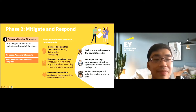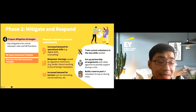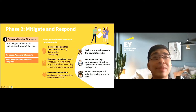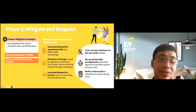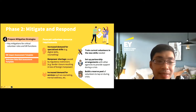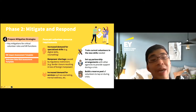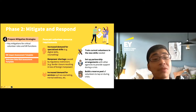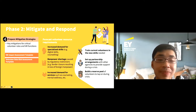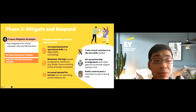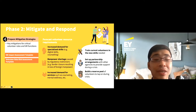Forecasting resource requirements means planning your volunteer needs ahead of time so that when crisis hits you know what steps to take. You may need more or fewer volunteers depending on the crisis. Typical situations calling for this mitigation include: increased demand for specialized skills such as digital and IT skills due to COVID; manpower shortages from regulatory restrictions; or increased demand for services like counseling. Mitigations include training current volunteers in new skills, setting up partnership arrangements with other agencies, or building a reserve volunteer pool during peacetime to tap on during a crisis.